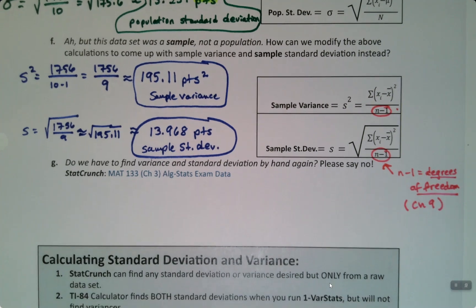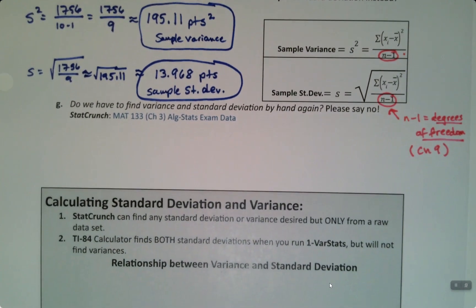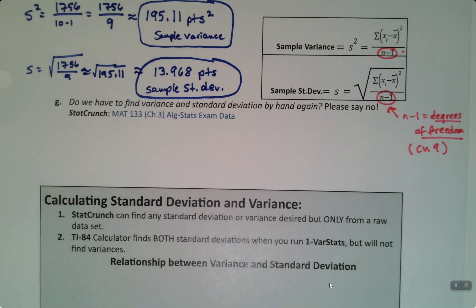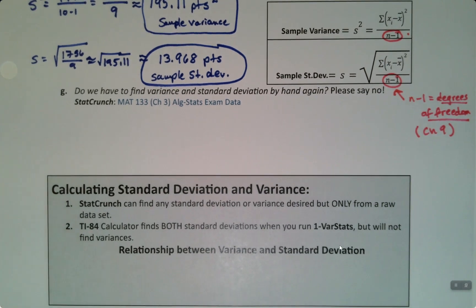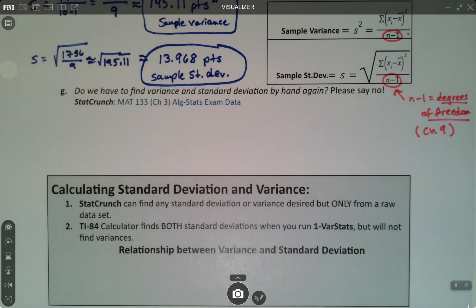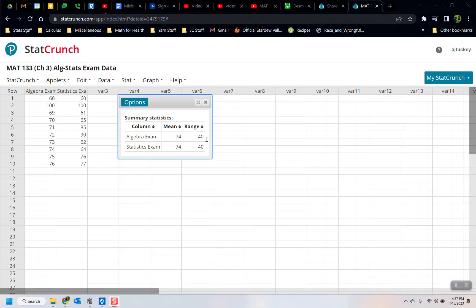A couple more comments before we finish this page. I want you to see how to do this in the calculator. In StatCrunch we can find the standard deviation and the variance, but for raw data we can do it a different way for other things — I'll show you that in another section. So let me go find StatCrunch. Here it is.